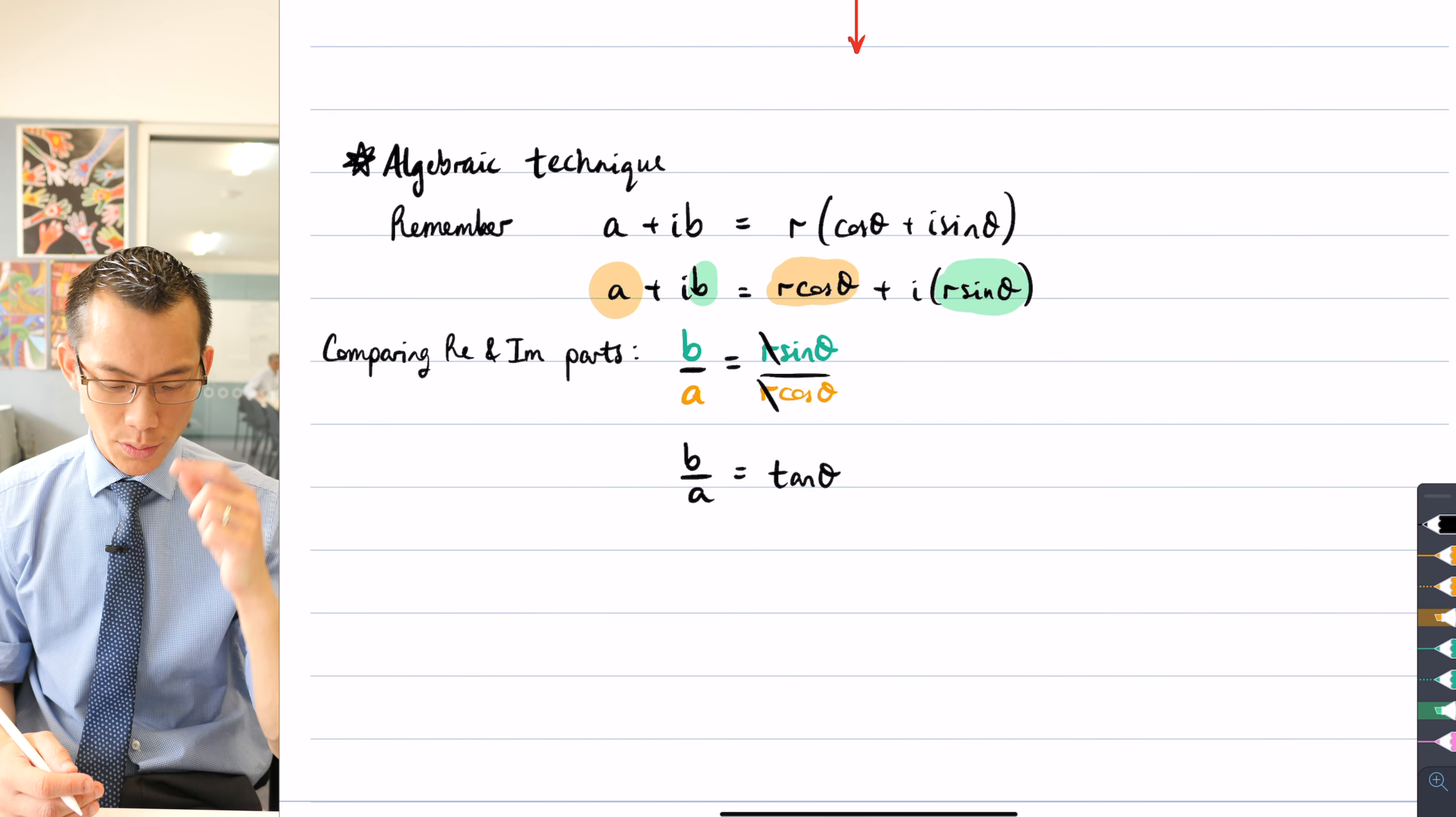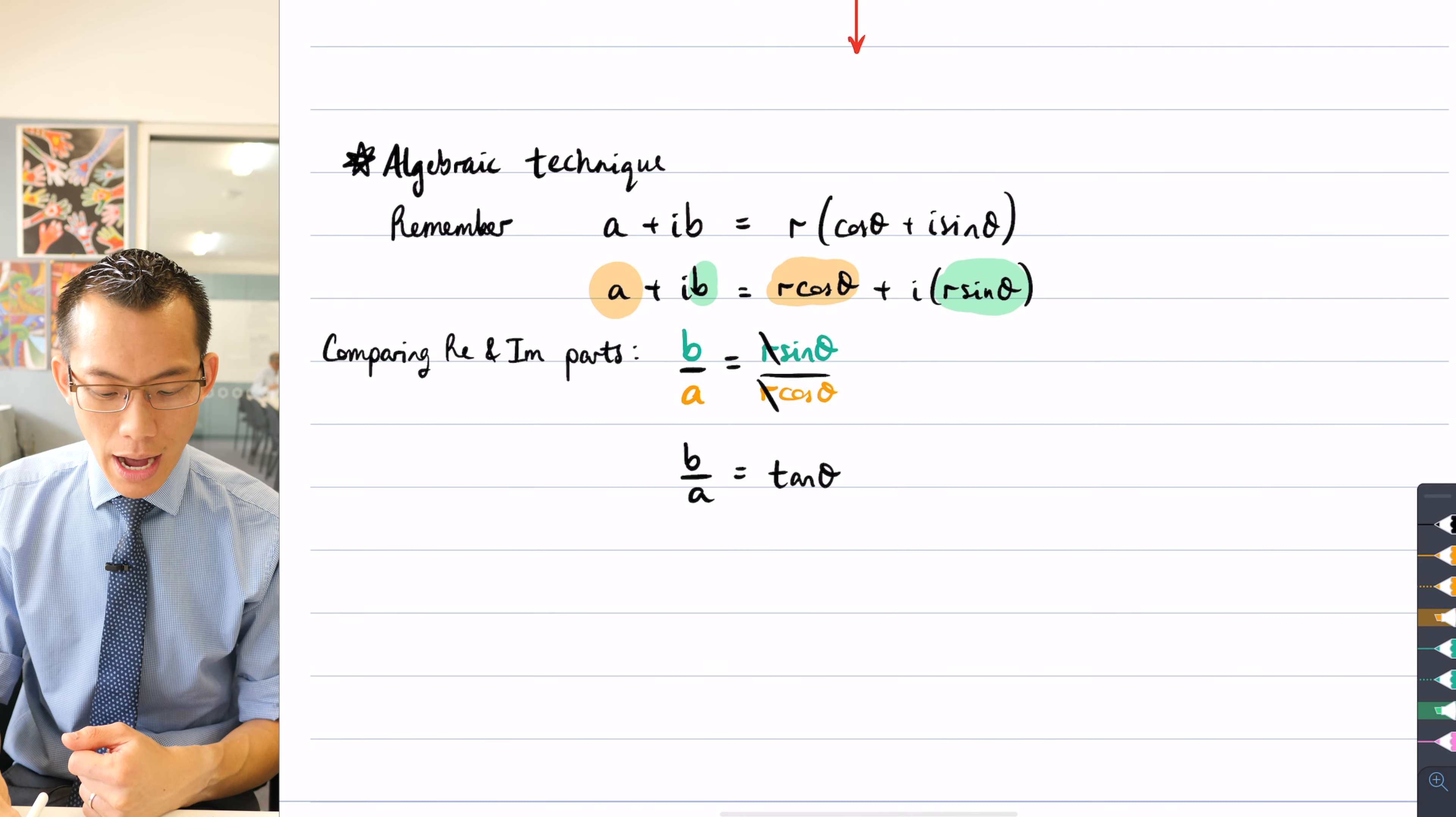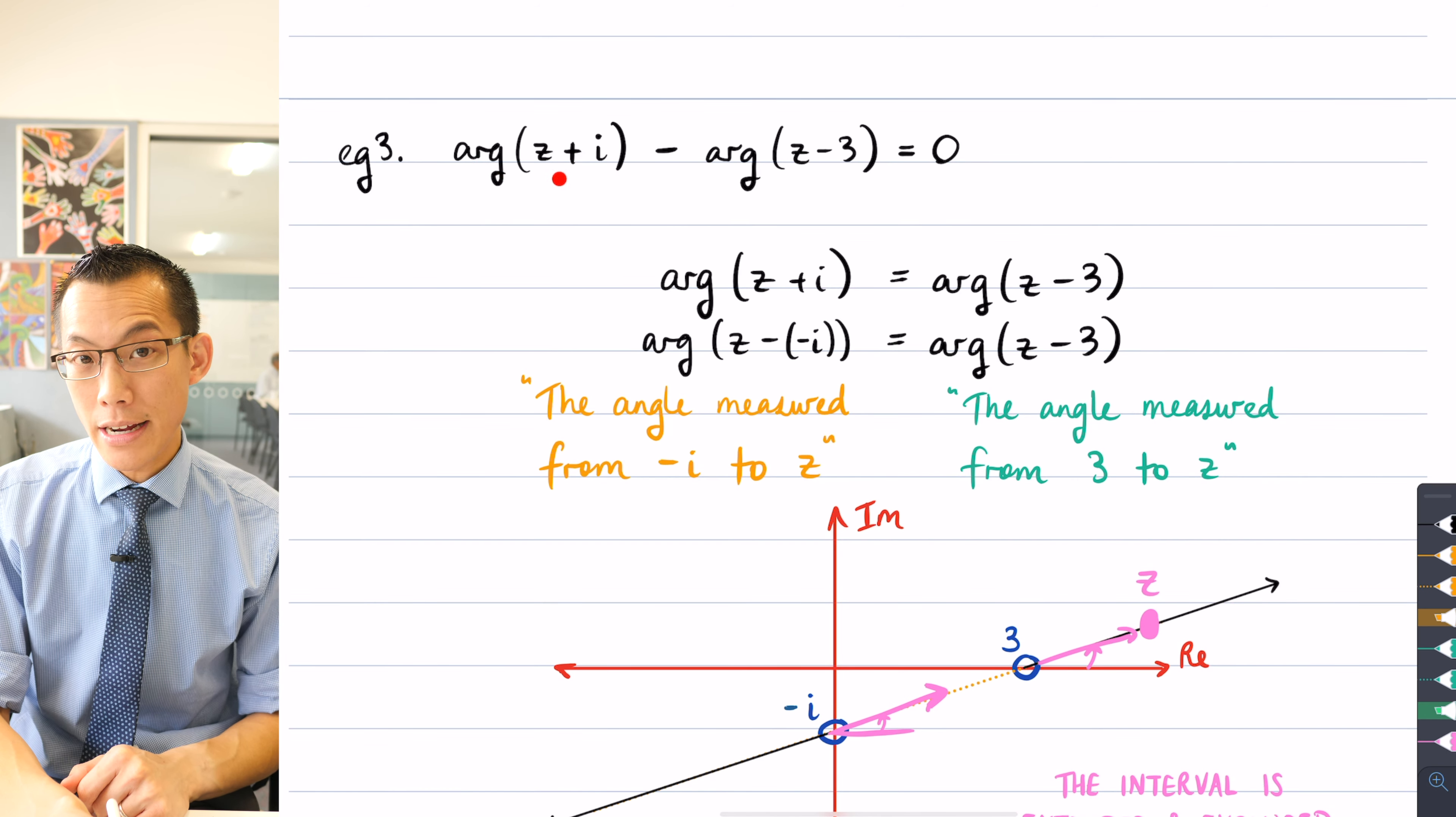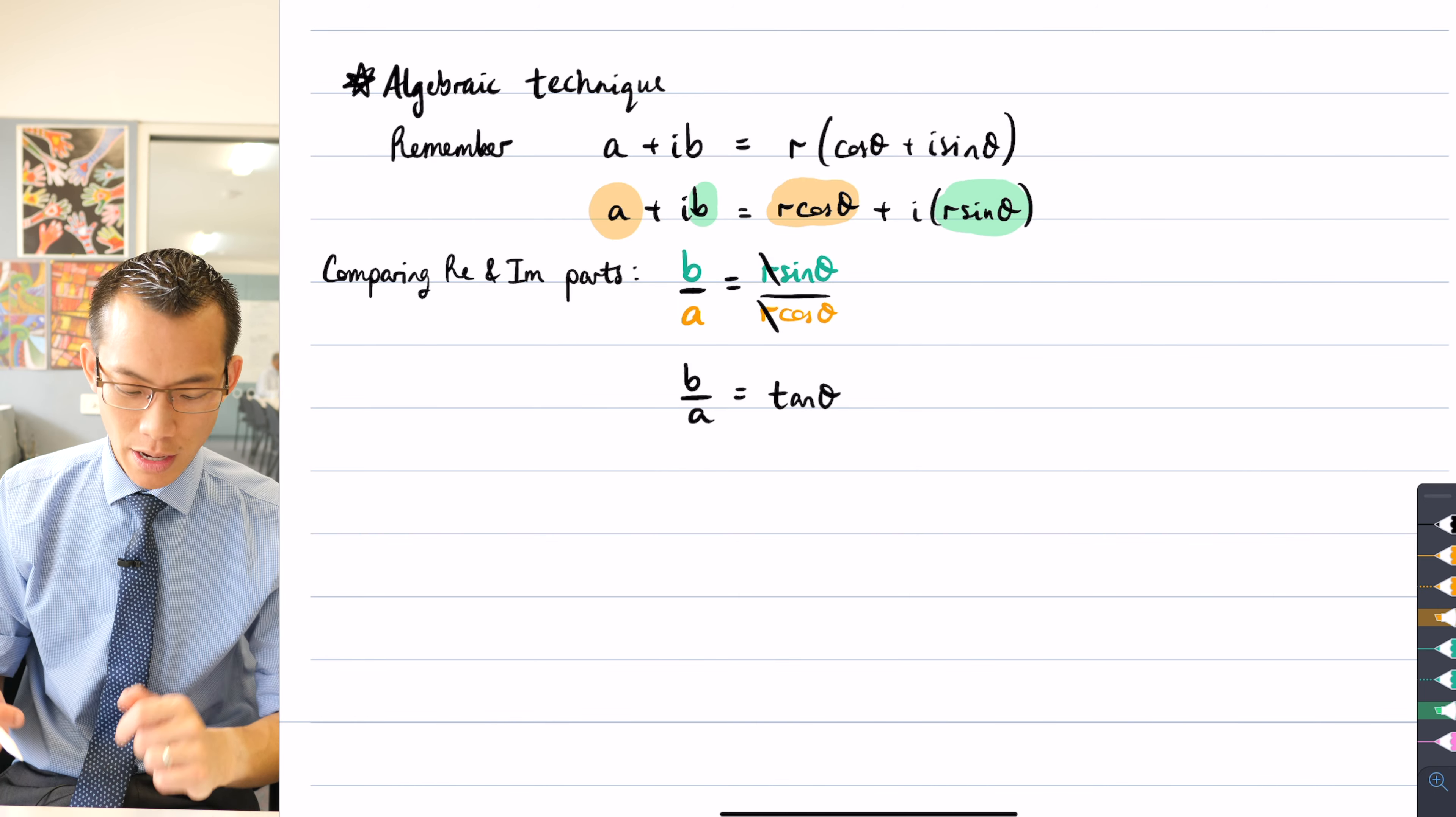Okay, now how is this useful to me? Well remember θ in this case is the argument that's relevant to this particular complex number. So I can start to get things in terms of what my original question looks like. You can see this is written in the form of argument of a number in rectangular form.